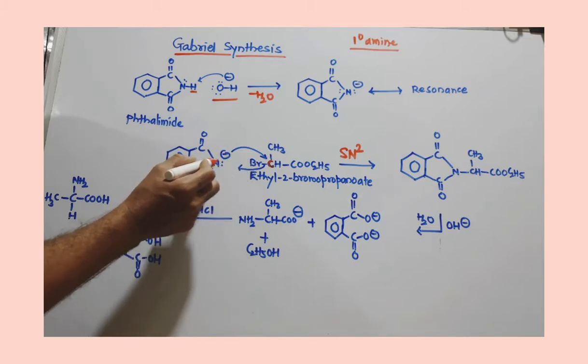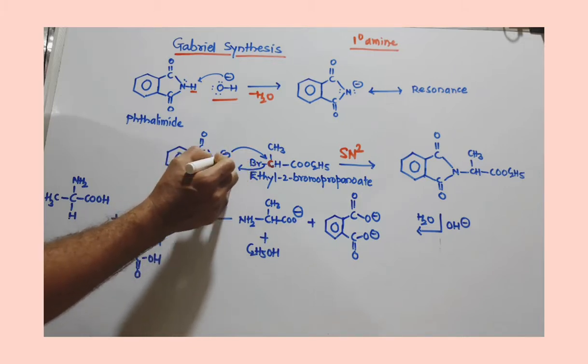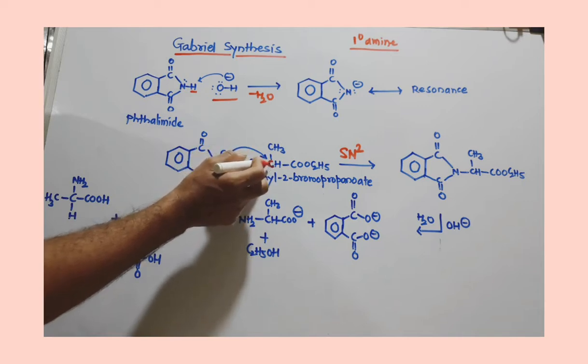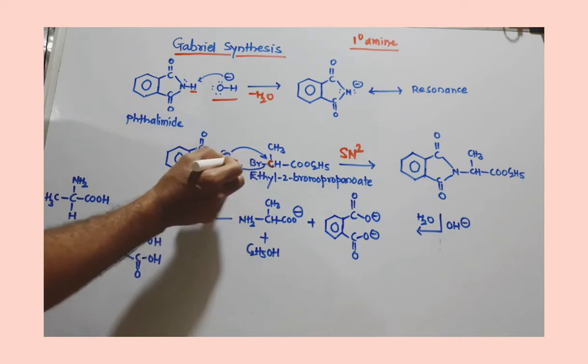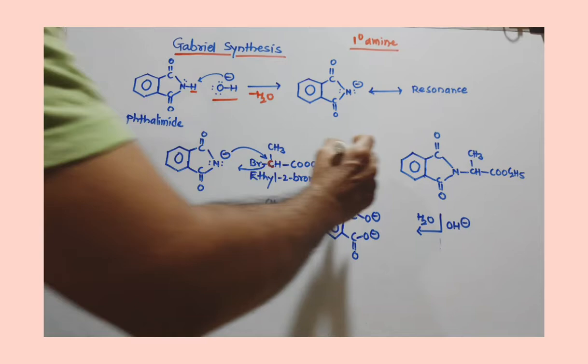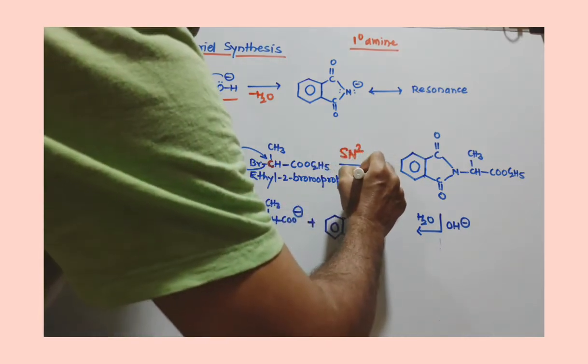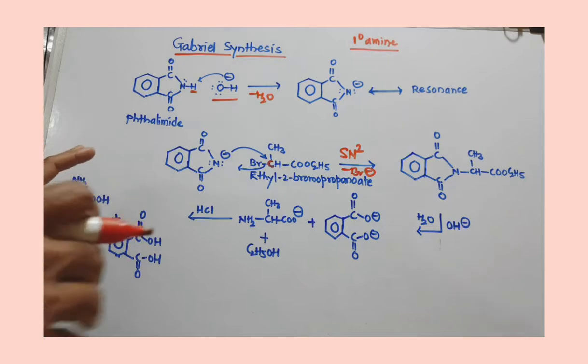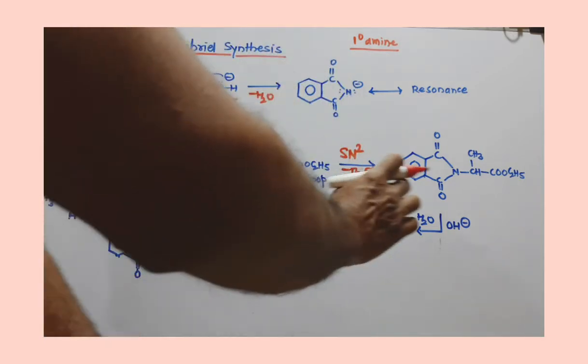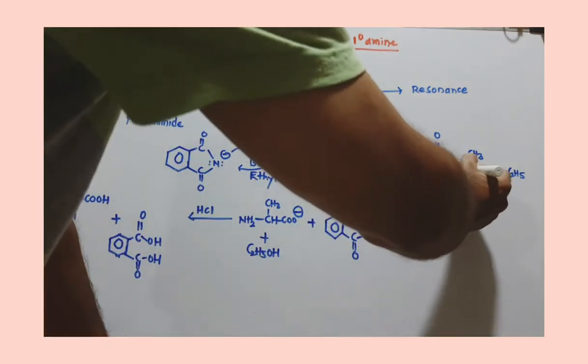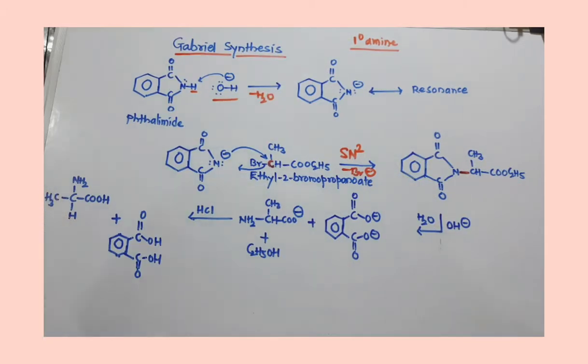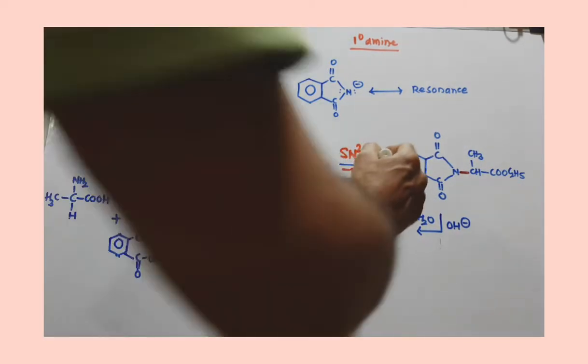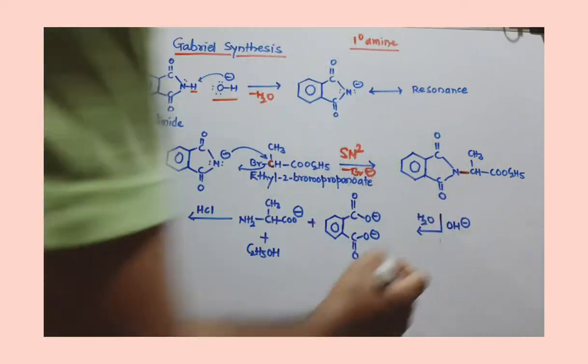By using one of the lone pairs of electrons, it will form bond with this carbon. This Br is now acting as a leaving group. It is removed from this reaction as Br negative. Now once it is done, this portion is now joined to this nitrogen. This new nitrogen-carbon bond is formed.